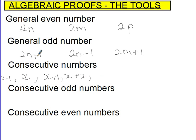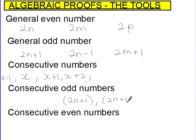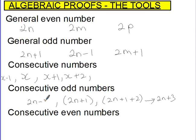Consecutive odd numbers. Let's go back to our general odd number: 2n plus 1. Think about any odd number, say 7. To get the next odd number, you'd add 2. So the odd number after this would be 2n plus 1 plus 2, which we'd normally write as 2n plus 3. The next one would be 2n plus 5. Likewise, to get the odd number before this one, we take away 2, giving us 2n minus 1.